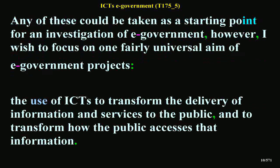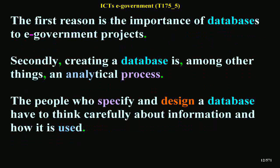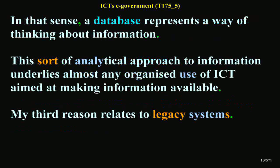I wish to focus on one fairly universal aim of E-Government projects: the use of ICTs to transform the delivery of information and services to the public, and to transform how the public accesses that information. Making information and services available on a large scale requires the extensive use of databases. I will therefore spend quite a lot of time looking at some fundamental ideas about databases. There are three reasons for devoting so much space to databases. The first is the importance of databases to E-Government projects. Secondly, creating a database is an analytical process — the people who specify and design a database have to think carefully about information and how it is used. In that sense, a database represents a way of thinking about information. This sort of analytical approach to information underlies almost any organized use of ICT aimed at making information available.